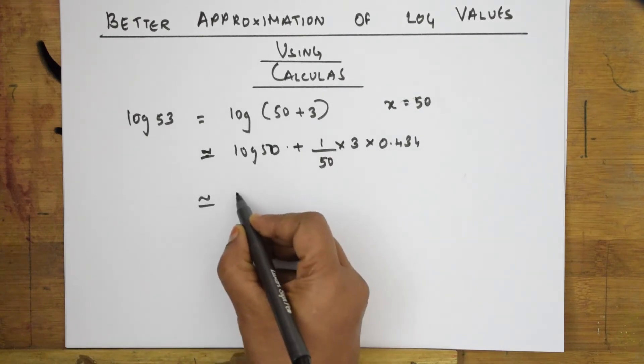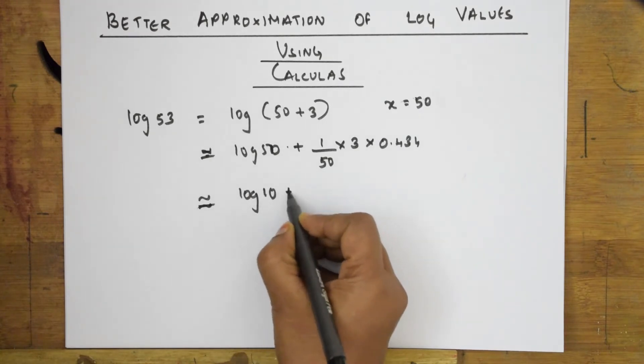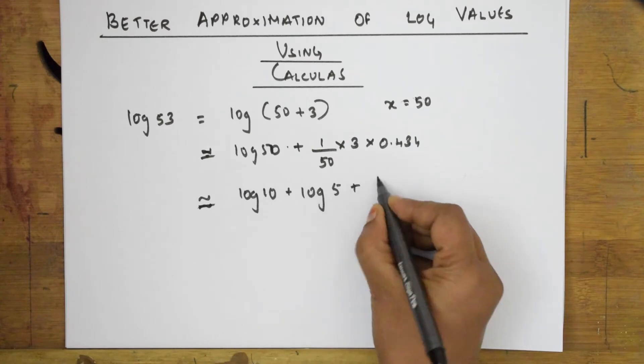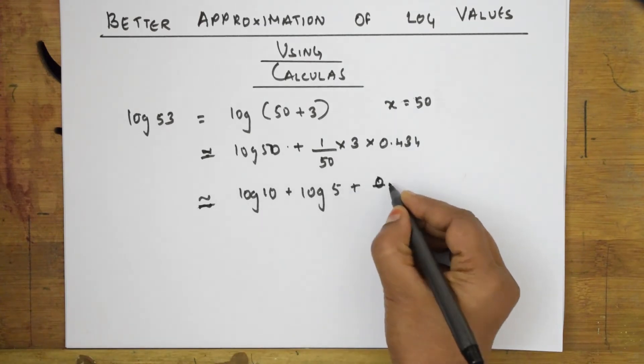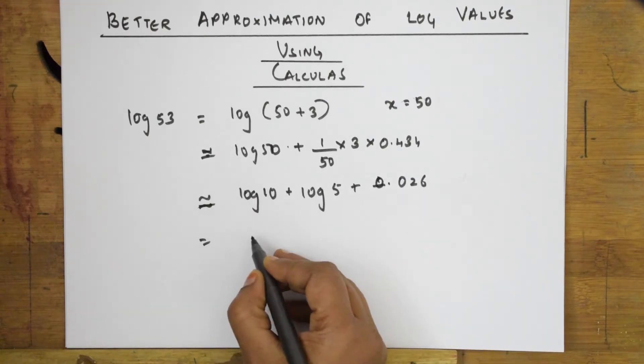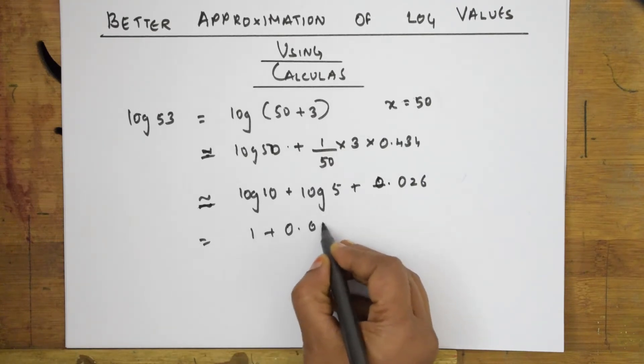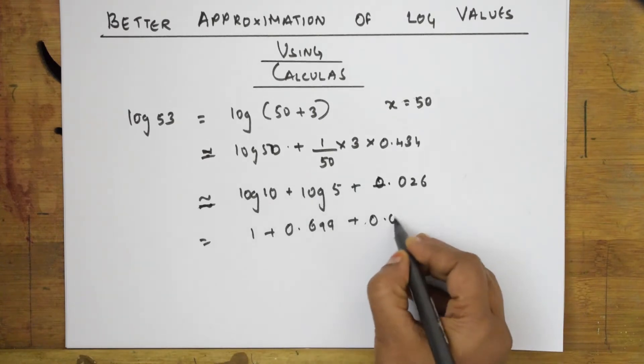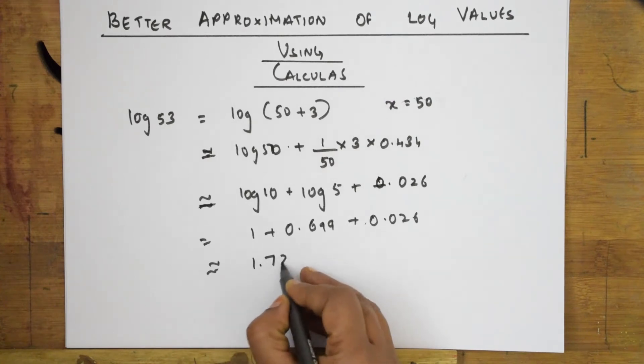We will also know what is this 0.434 in the later stages. Now, this approximately can be written as log 50 can be written as log 10 plus log 5, 10 times 5, plus 1/50. If I solve this whole thing, I get an answer of 0.026. For the log 10 value, I have already studied that is equal to 1 plus log 5 is 0.699 plus 0.026. When I solve this, I get an approximate answer of 1.725.